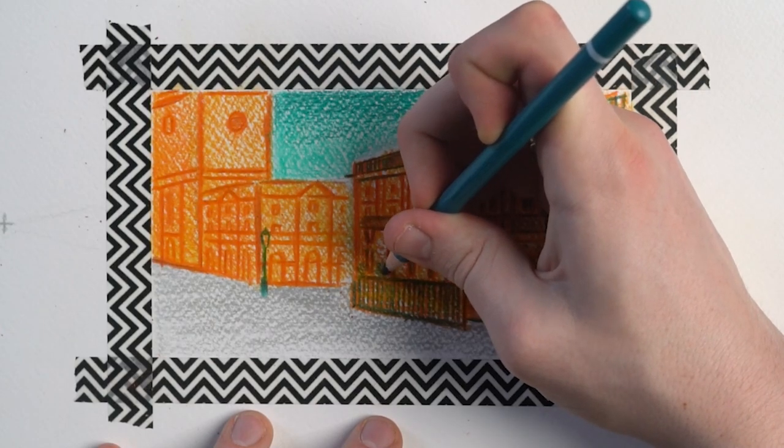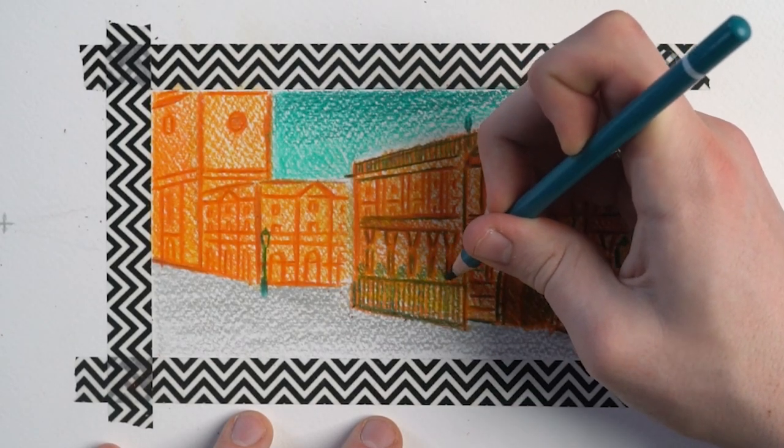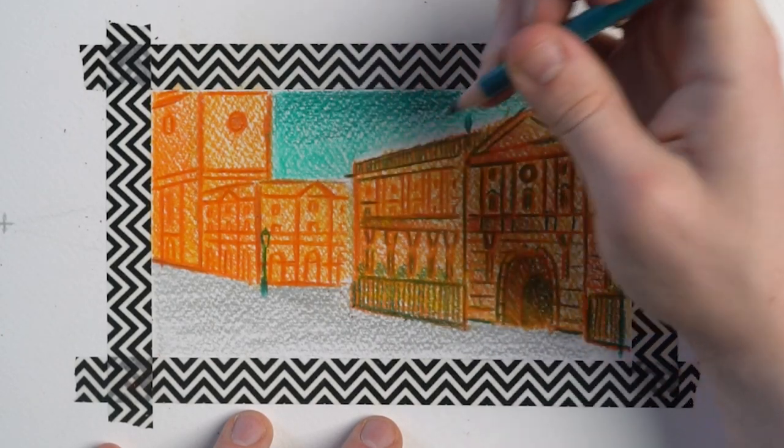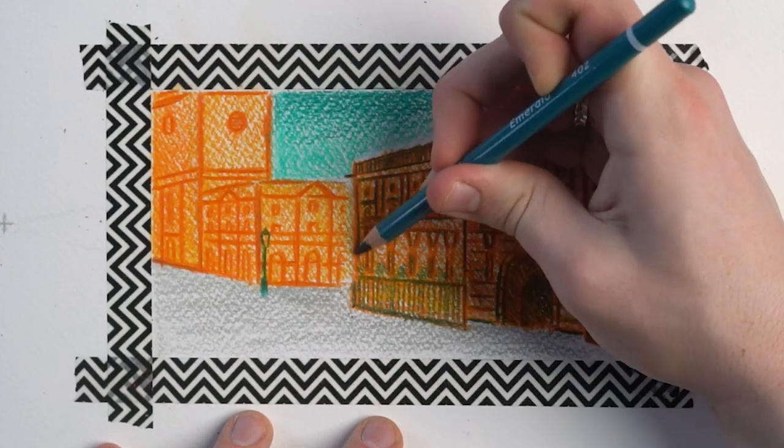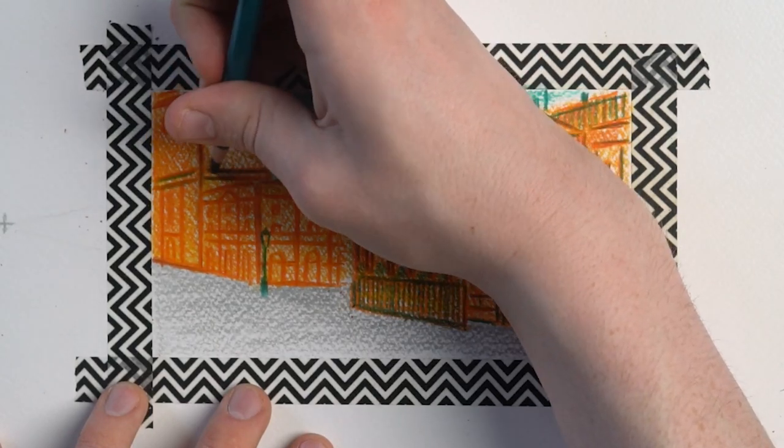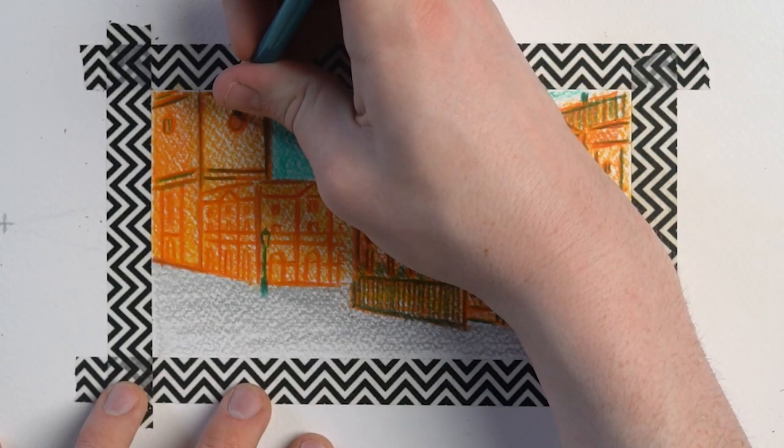I'm adding some subtle hints of foliage underneath the bottom windows and above the railing. I'm really just trying to better convey that sense of subtle texture and shadow. The emerald pencil on top of the yellow and orange tones creates a far more earthy green.